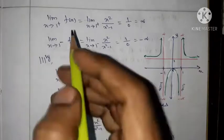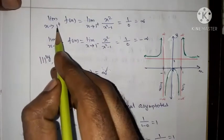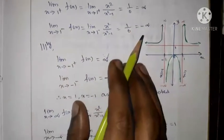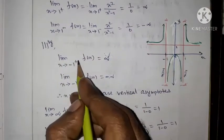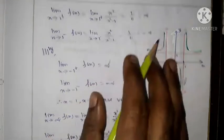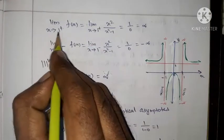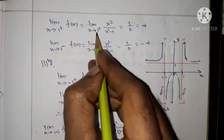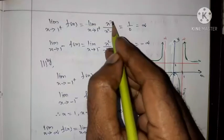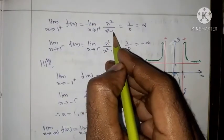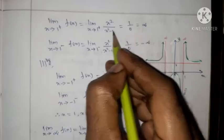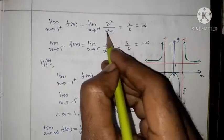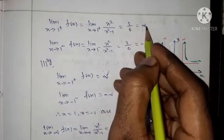We have two values: x = +1 and x = -1. Taking the limit as x tends to 1 from the right side: limit x→1⁺ of f(x) = limit x→1⁺ of x² / (x² - 1). Applying x = 1: we get 1 / (1 - 1) = 1/0, which is infinity.